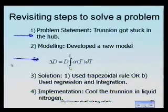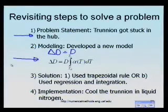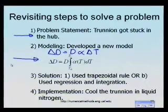We already know that using delta D equals D times alpha times delta T is not a good idea, because alpha is changing as a function of temperature. So we are going to use a more accurate model, which is as follows.